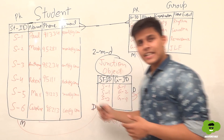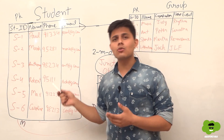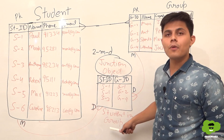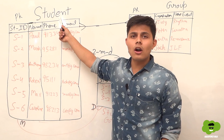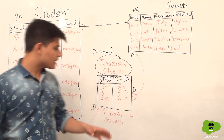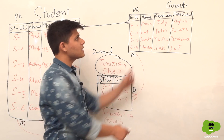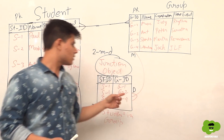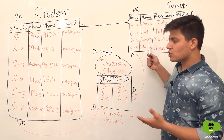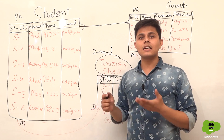Whichever relationship field you create first becomes the primary relationship, and the object it relates to becomes the primary master object. For example, if you create the student field first on the student-in-group object, then student is the primary master object. If you create the group ID field first, then group is the primary master object. The second field created becomes the secondary relationship and its object becomes the secondary master object.